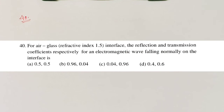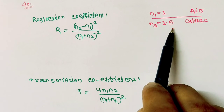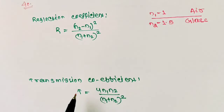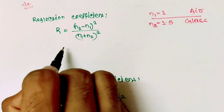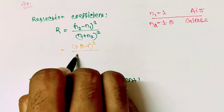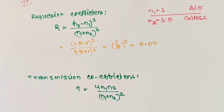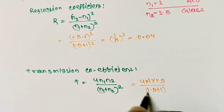Question number 40: For an air-glass interface, the reflection and transmission coefficients for an electromagnetic wave falling normally are to be found. With glass refractive index n₂ = 1.5 and air n₁ = 1, the reflection coefficient R = (n₂ − n₁)² / (n₁ + n₂)² = (0.5)² / (2.5)² = 0.25/6.25 = 0.04. The transmission coefficient T = 4n₁n₂ / (n₁ + n₂)² = 4 × 1 × 1.5 / (2.5)² = 6/6.25 = 0.96. The correct option is option C.